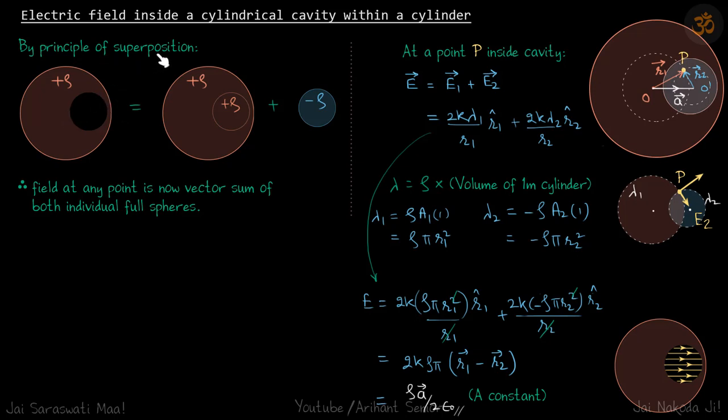By principle of superposition, because we want to find the field inside it, we complete the cylinder by adding the missing part of charge density rho and also adding at the same position a cylinder with charge density minus rho.